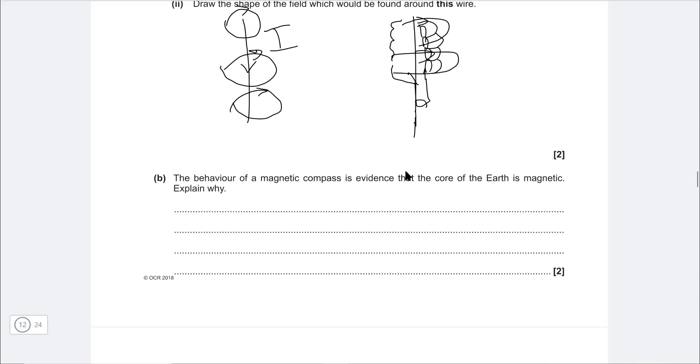Next one: the behavior of the magnetic compass is evidence that the core of the Earth is magnetic. Explain why. Well, the magnetic arrow, the magnetic material will be pointing in the direction of north to south. So the north pole will be aligned, will point towards the north and the south towards the south pole. So we can say that it points to the magnetic north/south. That's just because the back of the arrow will be pointing towards the south, the front towards the north.